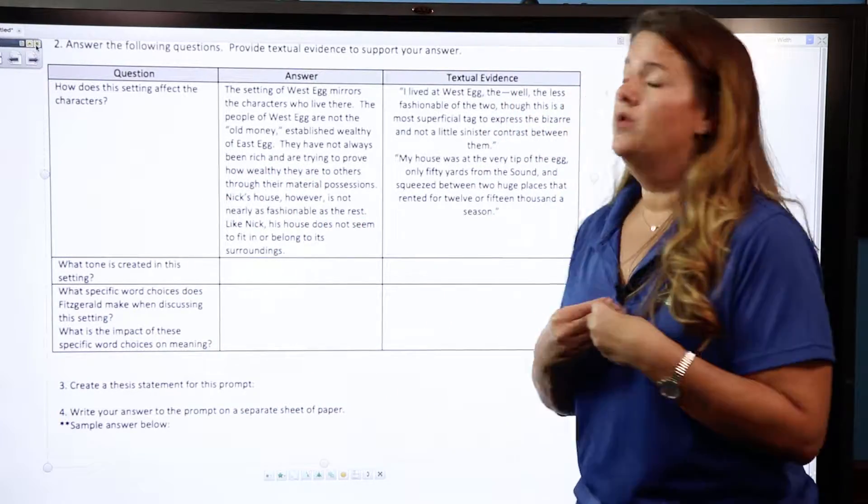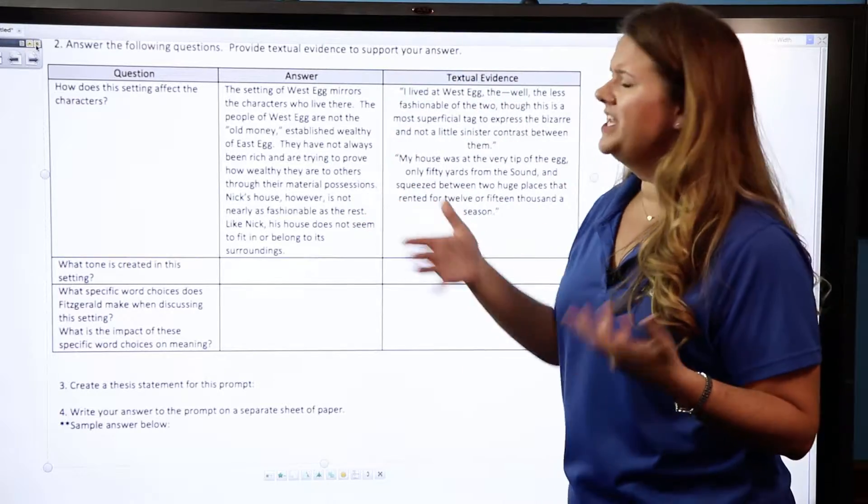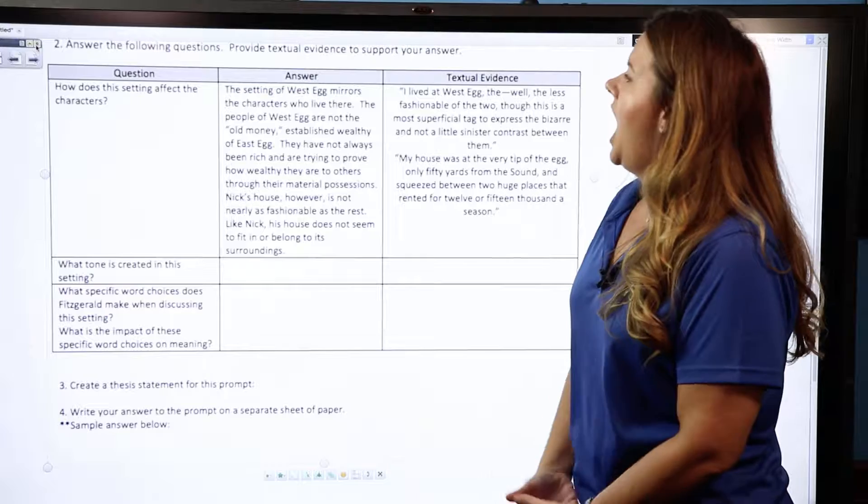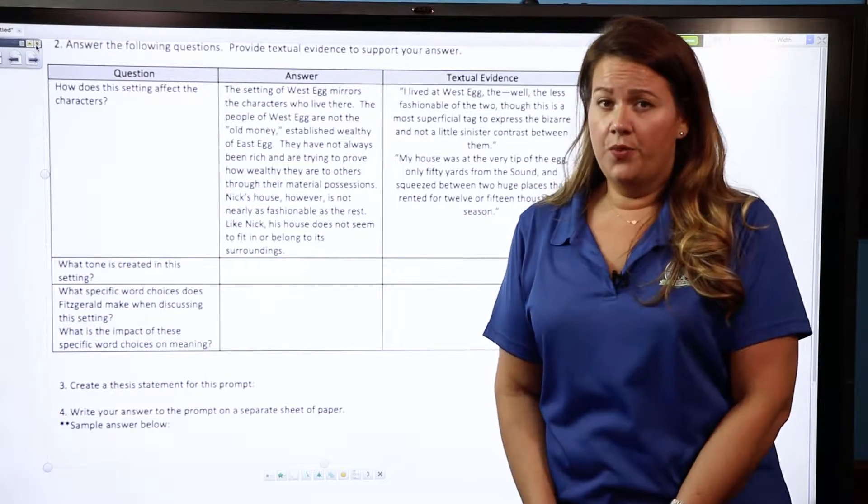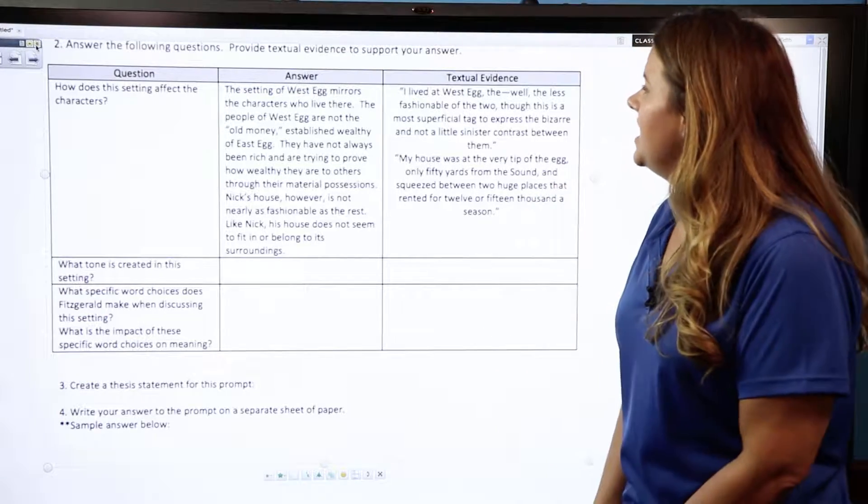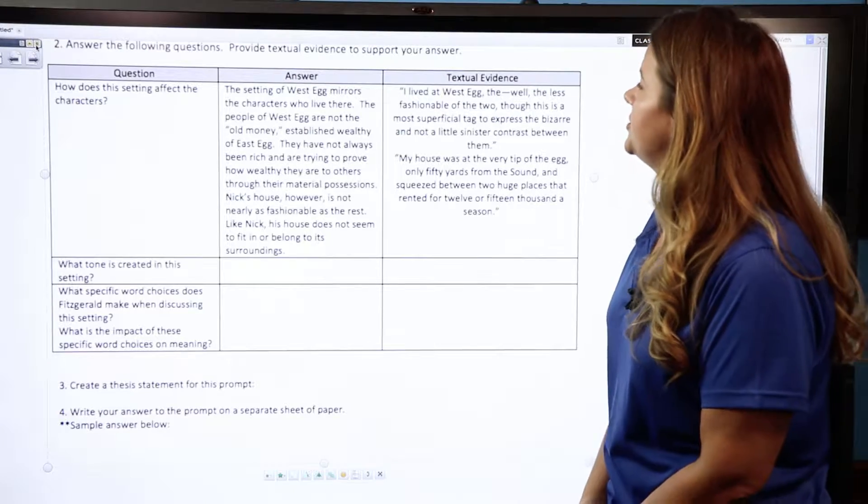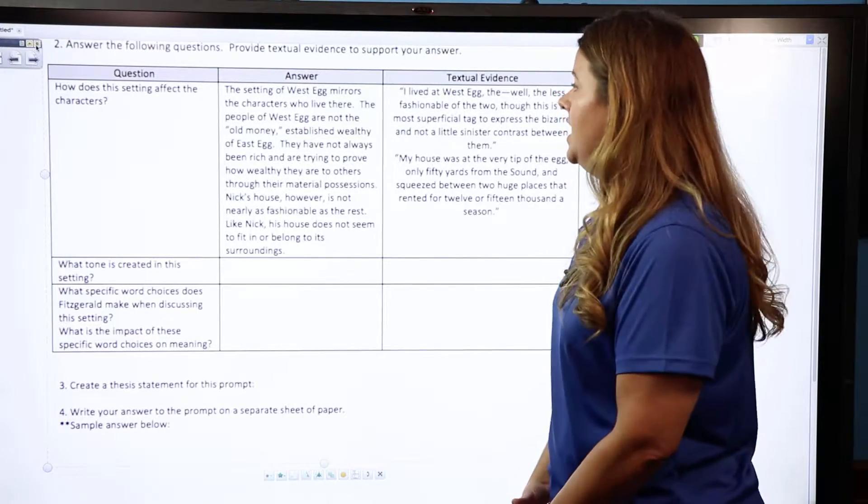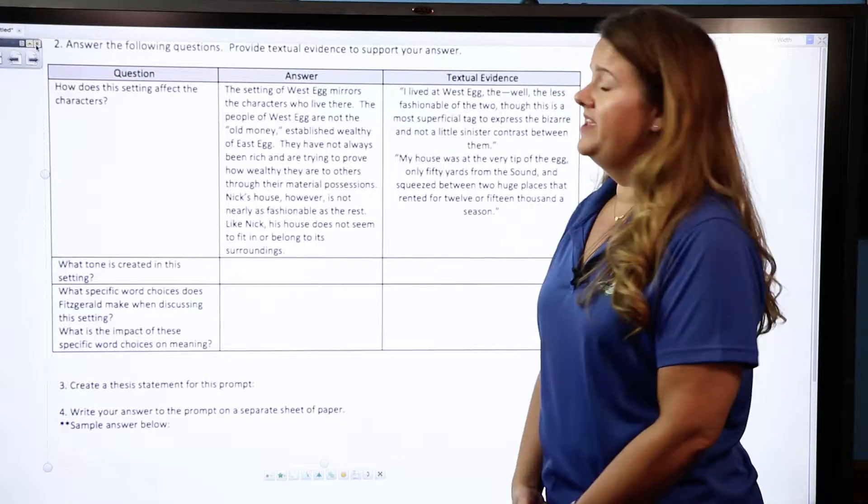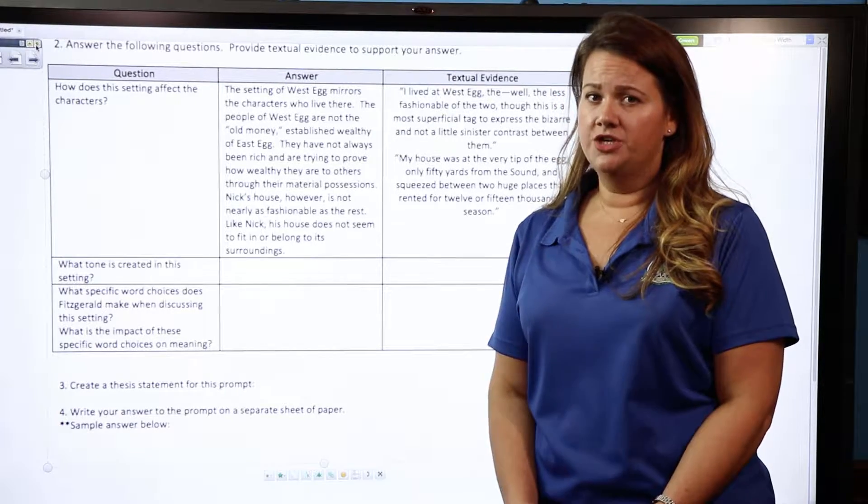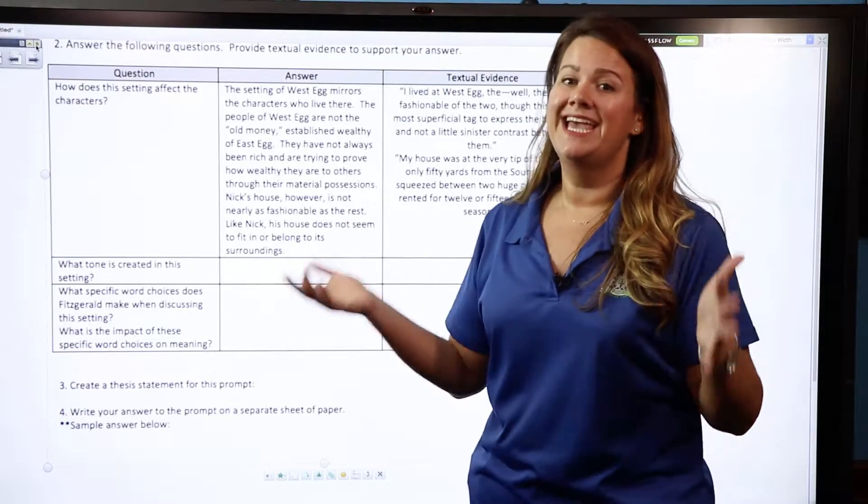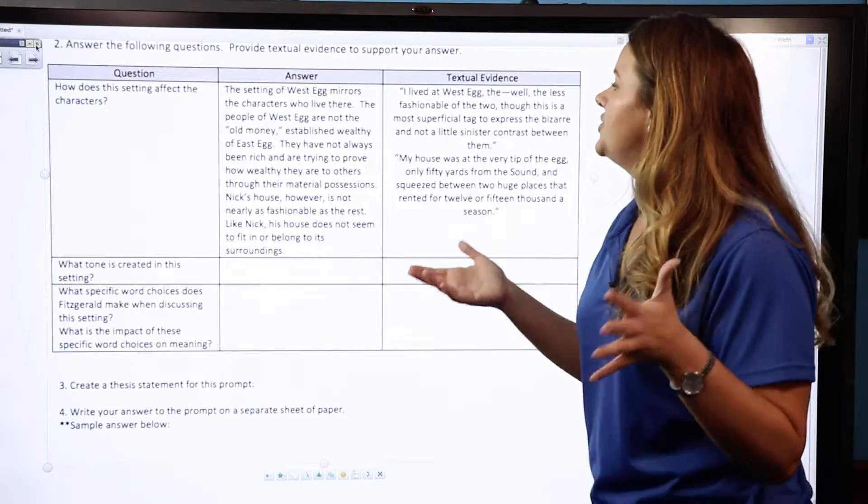So the first question that you are given: How does the setting affect the characters? So how does this location, the time, all of those things impact the people in your novel? You want to give an explanation, a response, an answer to that. So I've written specifically about West Egg, that the setting of West Egg mirrors the characters who live there.